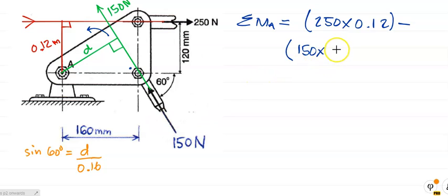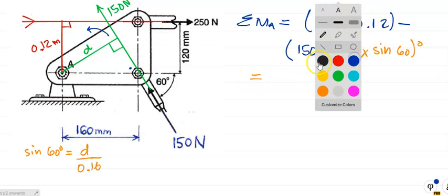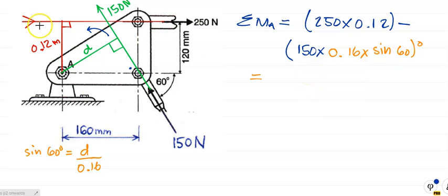Right, so little d is over here, so I'm going to say 150 times little d, but little d is 0.16 multiplied by sine 60. Let me change the color now. Right, so pick up your calculator and work out the answer. And the answer should be 9.22 newton meters.